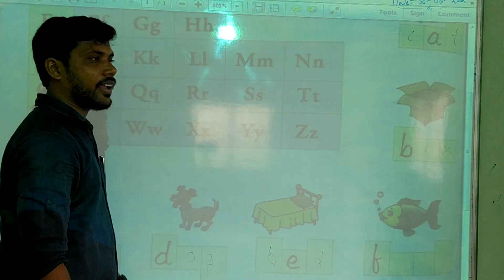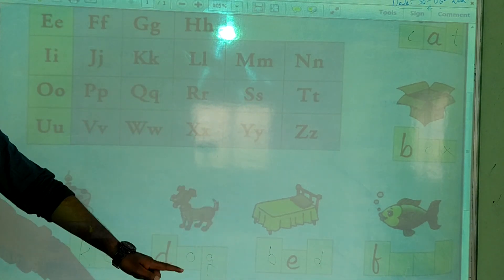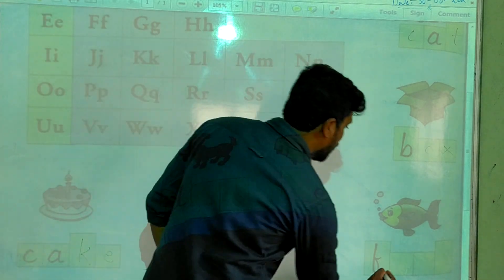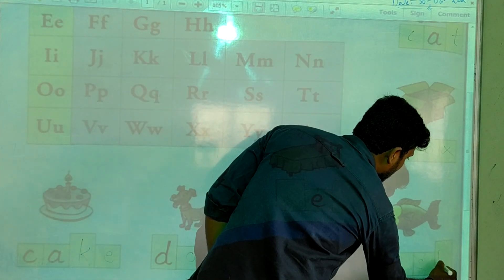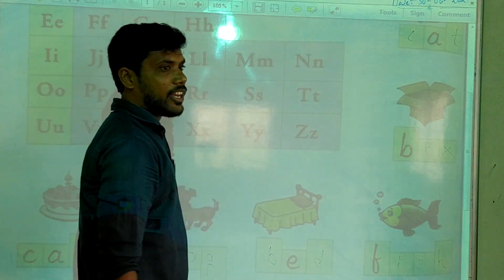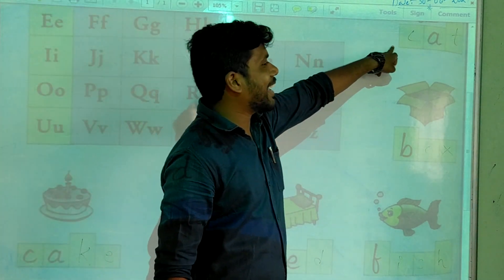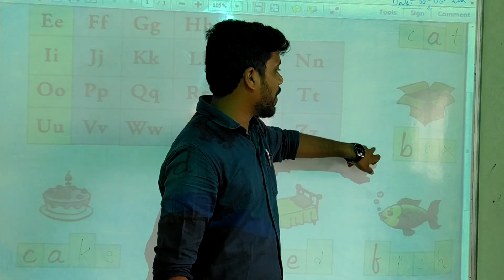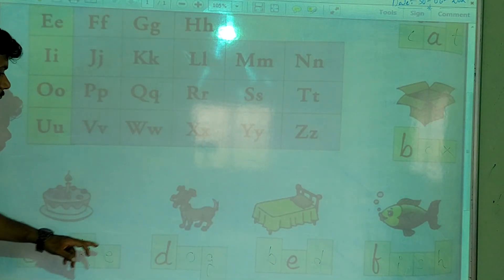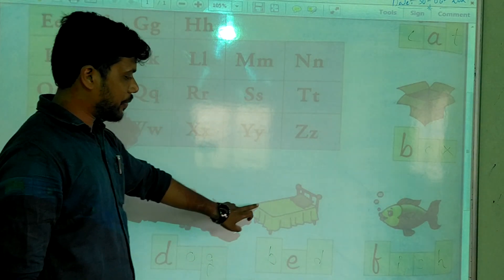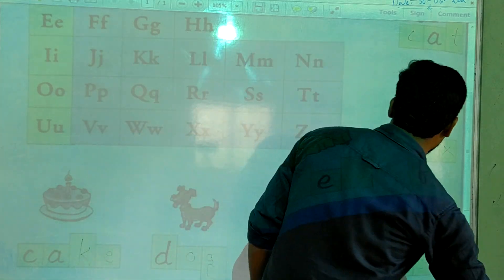And last one, what is that? Fish. F-I-S-H. So, first one is cat, second one is box, third one is cake, fourth one is dog, fifth one is bed, and sixth one is fish.